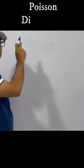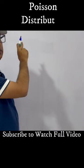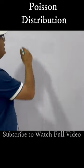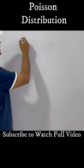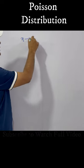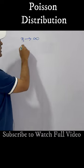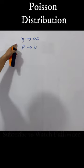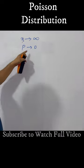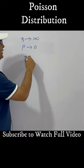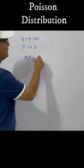Poisson distribution gives the probability distribution of very rare events. It is basically the limiting case of binomial distribution where n tends to infinity and p tends to 0 — that is, the number of events is very large while the probability is very small — keeping np, that is the mean, constant.